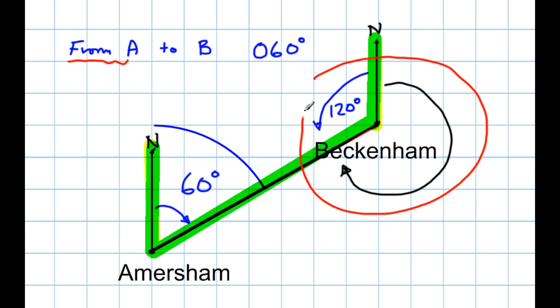Now, I know a full turn is 360 degrees. Therefore, this bit here in black, that must be 360 take away 120. It must be 240 degrees. OK. I hope that helped. Thank you.